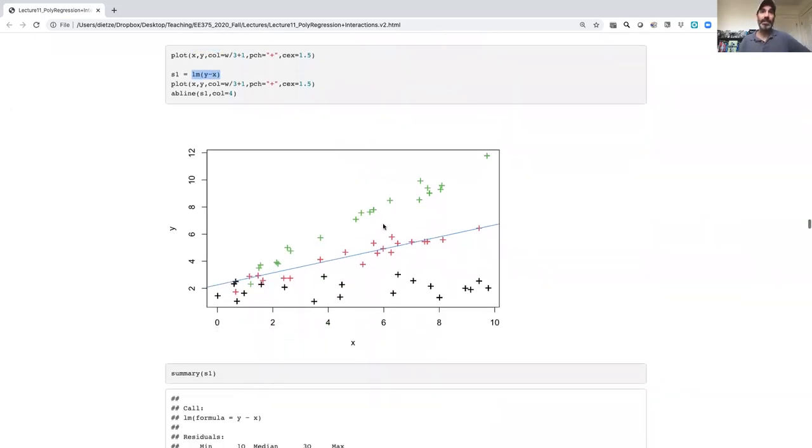So I'm going to fit my standard linear model of just y as a function of x. In that case, now that I've colored things by w, we can see that I actually did a pretty good job at capturing the intermediate value, the red pluses, but really not capturing the two other relationships, one where there's almost no relationship between x and y for the black, and one where for the green the relationship between x and y is a good bit steeper.